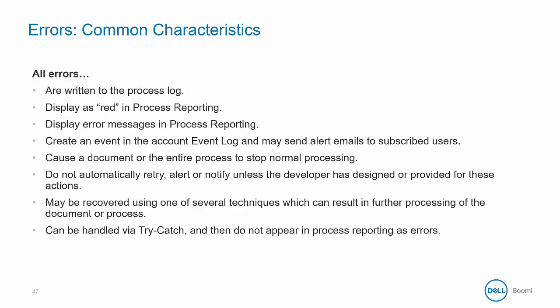Errors have some common characteristics. All errors are written to a process log; unrecoverable errors are written to the process log after the runtime is brought back up. Errors are flagged with a red dot in the process reporting view and can display an error message. They will create an event in the account event log and may send alert emails to any subscribed users, so long as those alerts are set up.